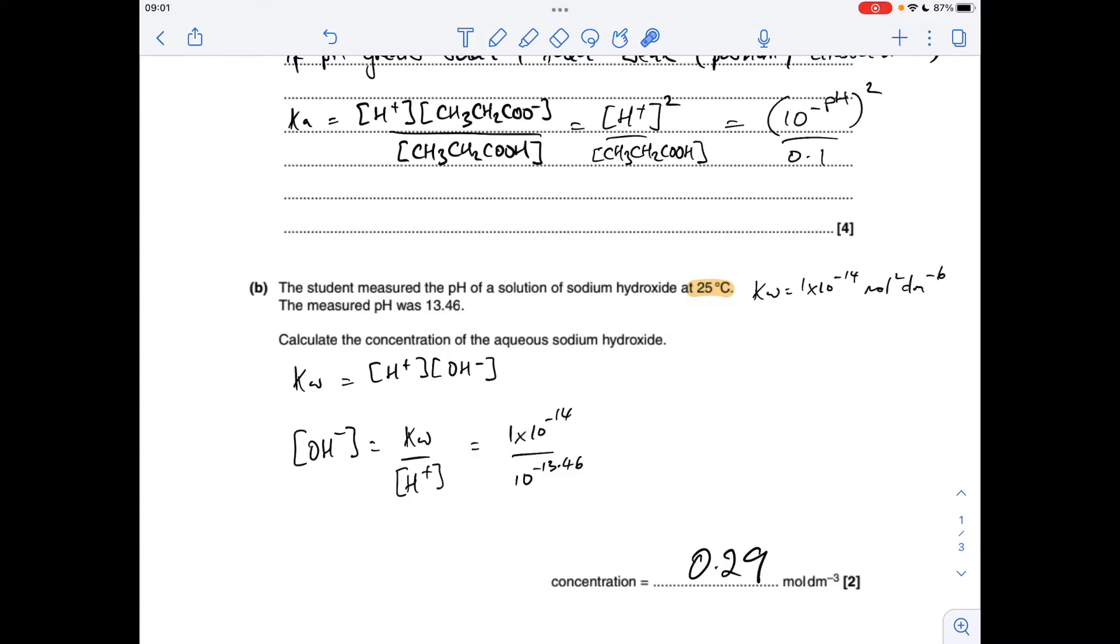So 1 times 10 to the minus 14, H+ concentration, remember, is 10 to the minus pH, and that gives us an answer of 0.29 moles per decimetre cubed.